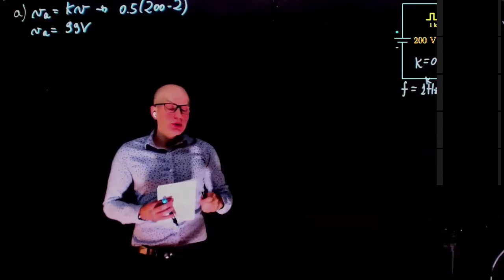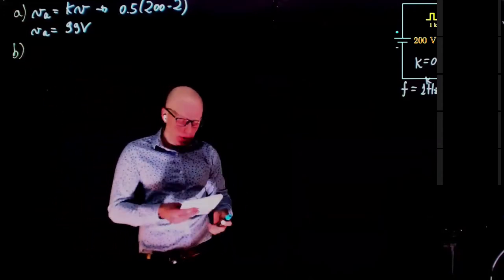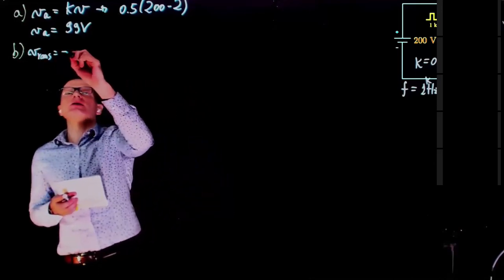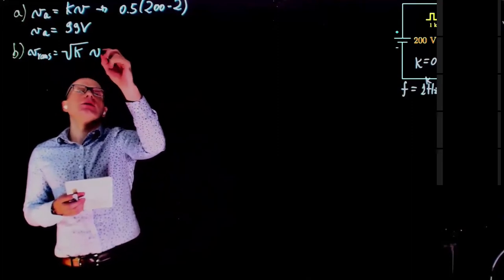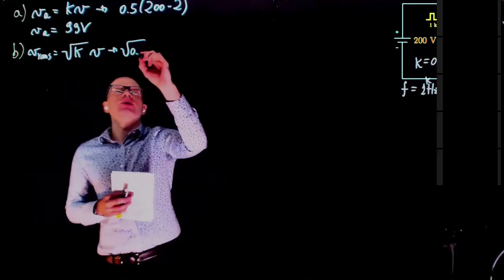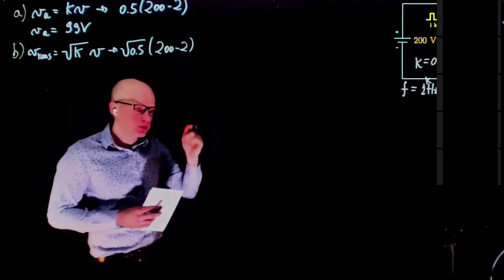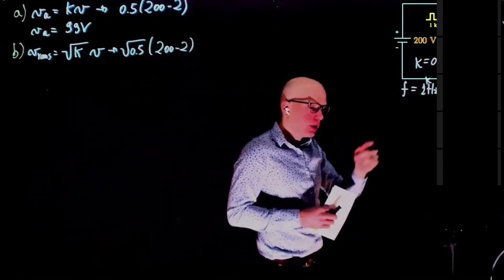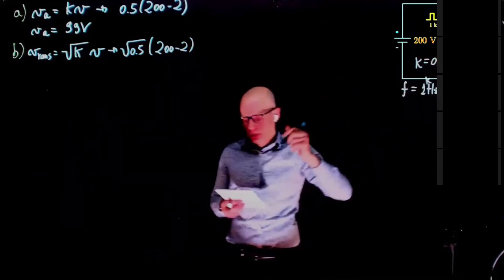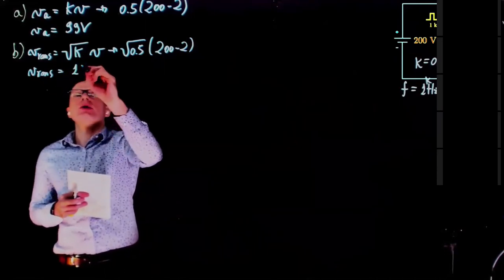Part B — RMS output voltage. The RMS voltage is the square root of K times the effective load voltage: square root of (0.5) times 198 = 140 volts.